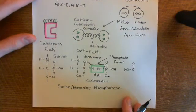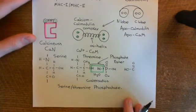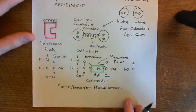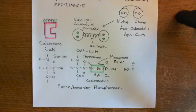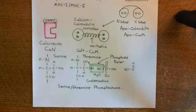Calcineurin is a serine-threonine phosphatase, so it's going to remove phosphate groups from serine and threonine residues within proteins.